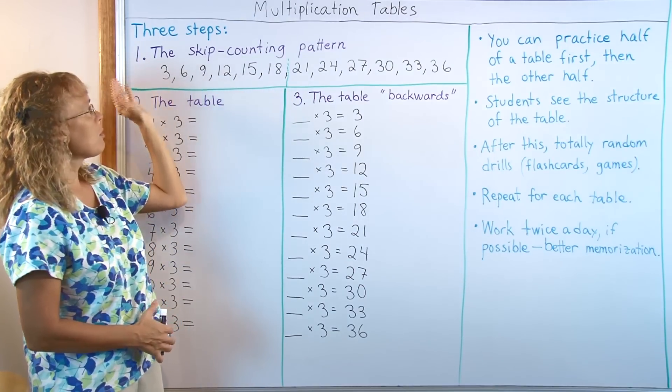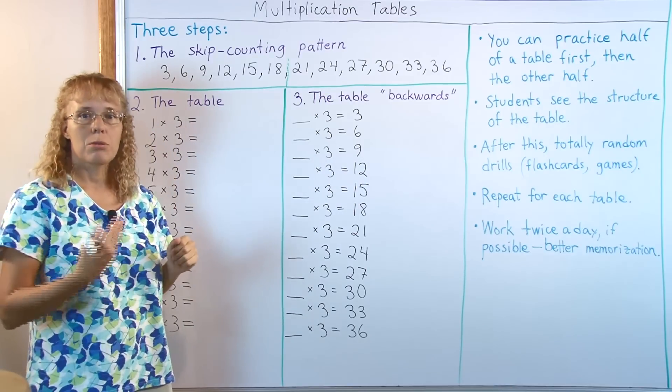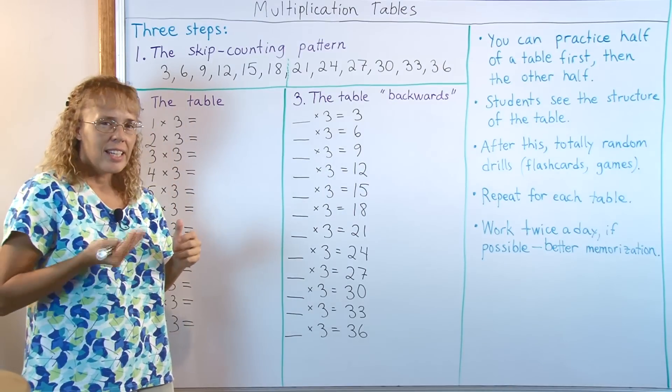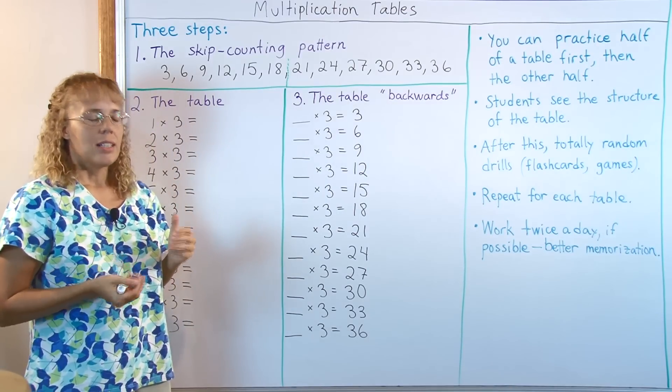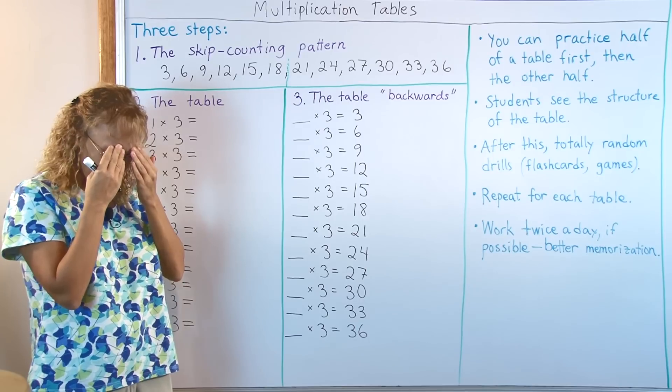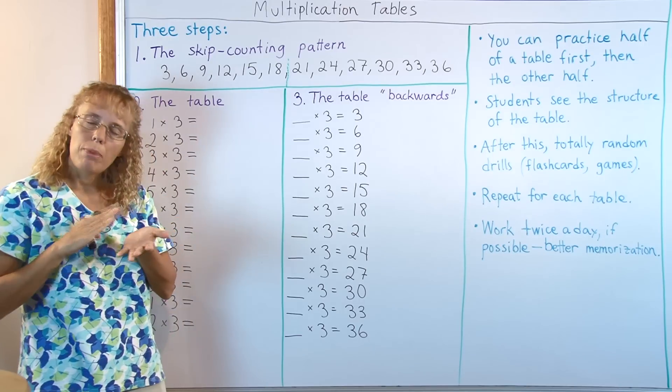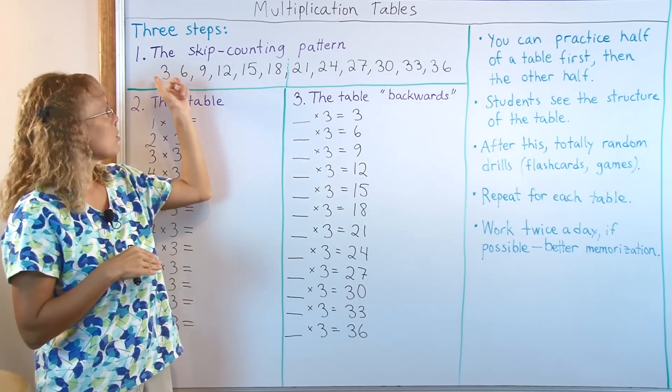You can just ask them to repeat 3, 6, 9, 12, 15, 18 and then say that from memory: 3, 6, 9, 12, 15, 18, and also backwards from 18 to 3.